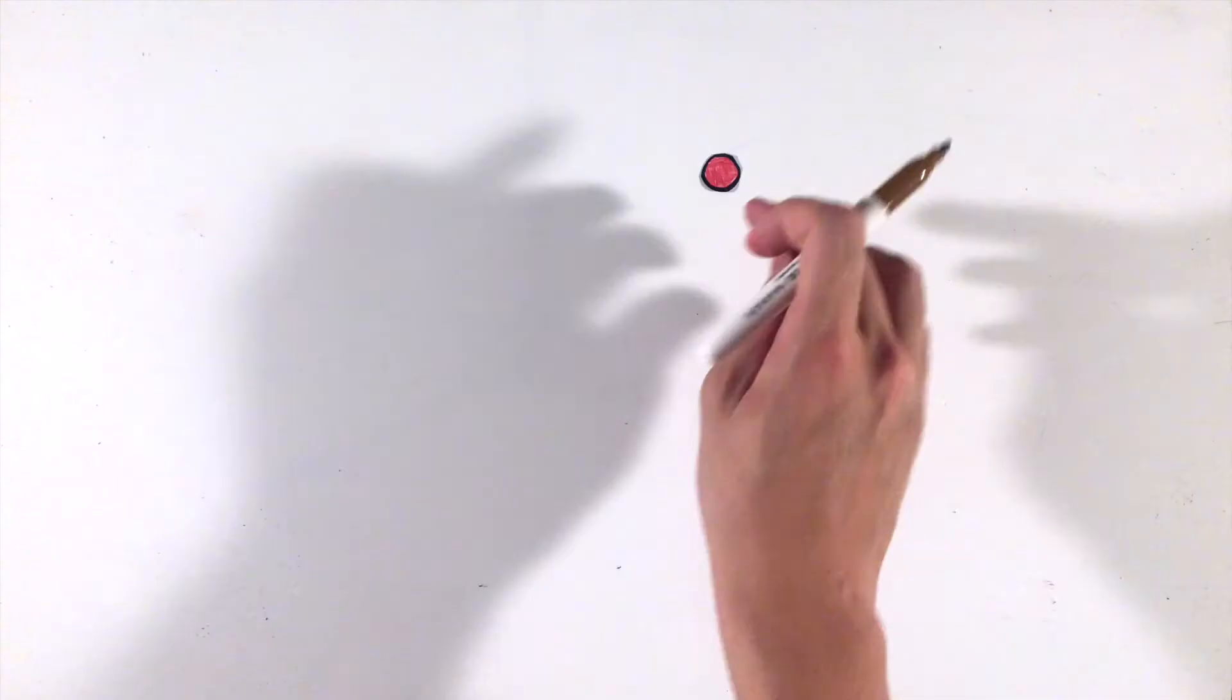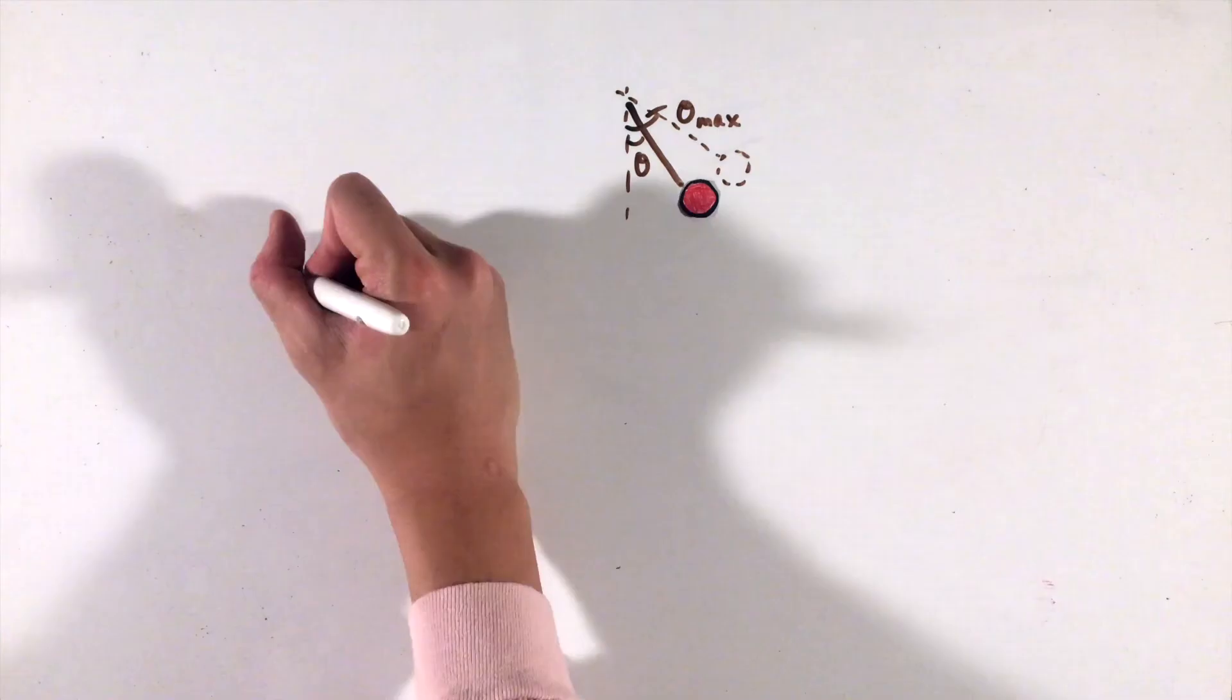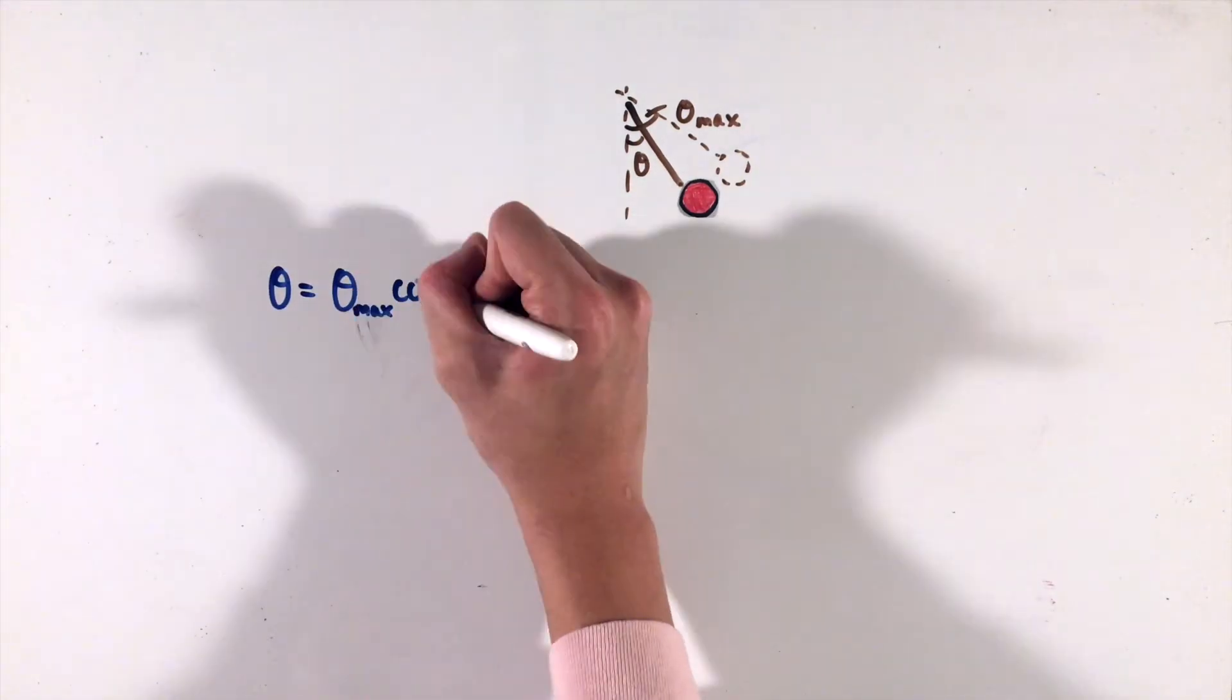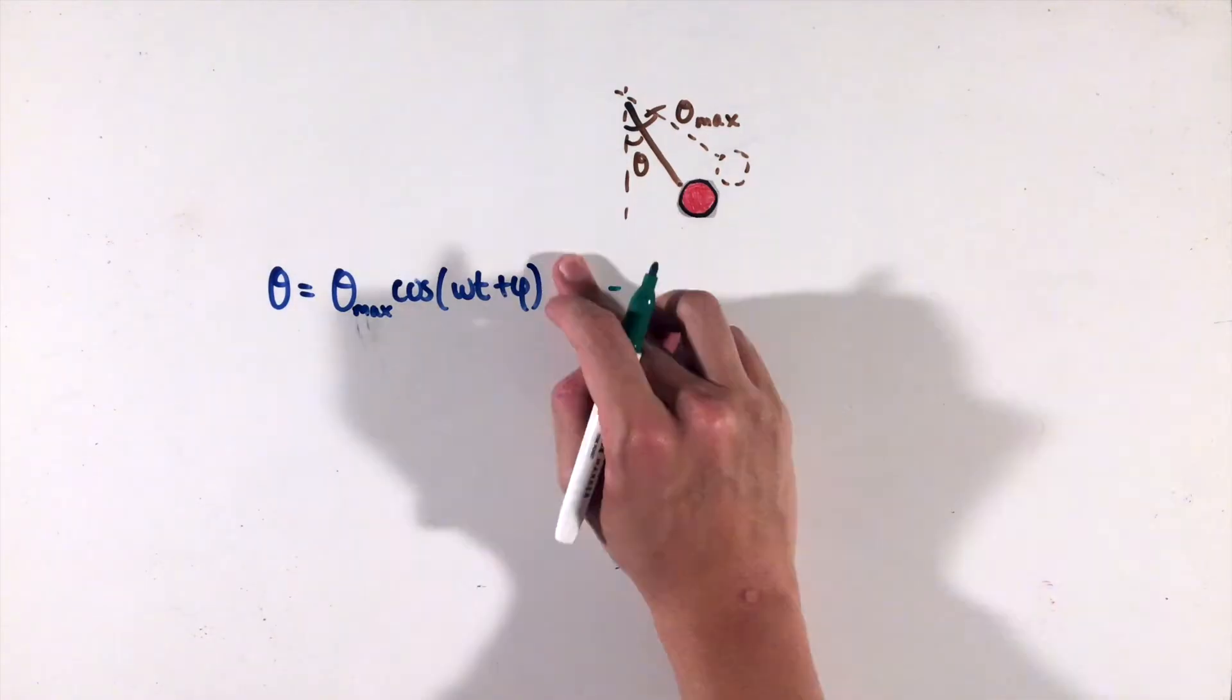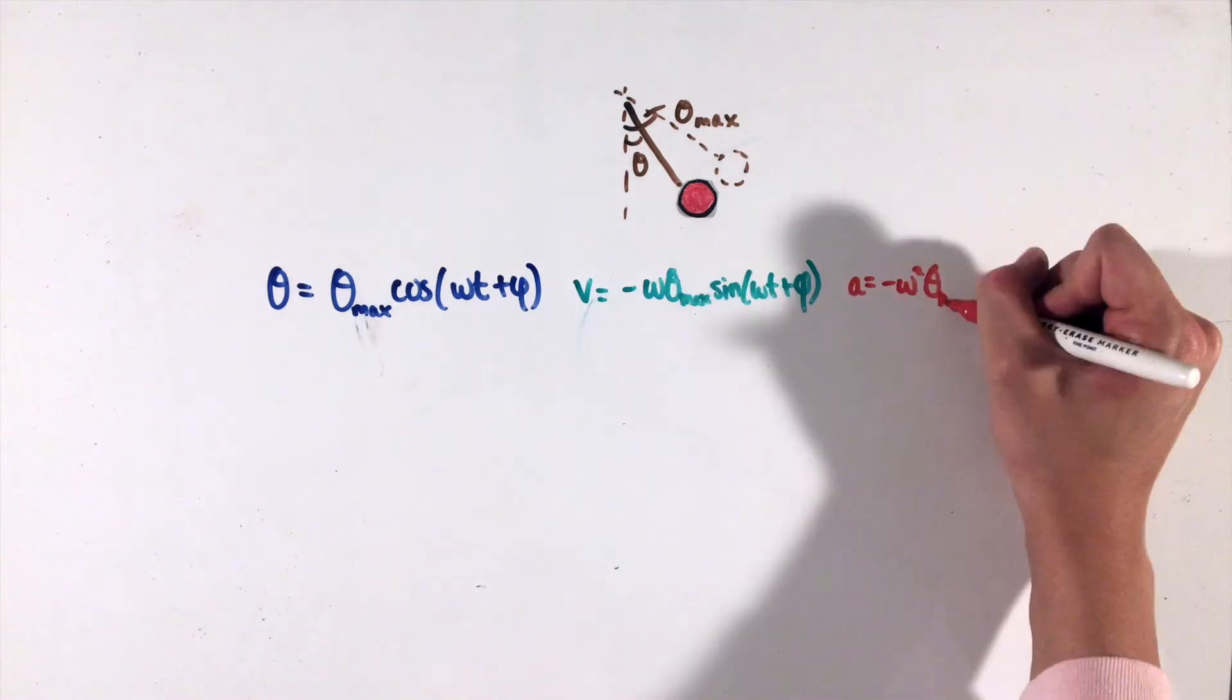But we can also represent the motion of this pendulum using equations. Actually, for the motion of this simple pendulum, the position, or in the pendulum's case, the angle the string makes with the vertical vs. time, the velocity vs. time, and the acceleration vs. time equations of the object are shown here.